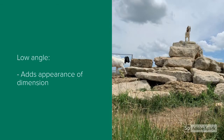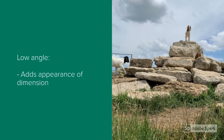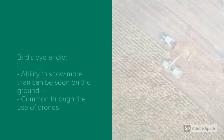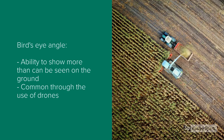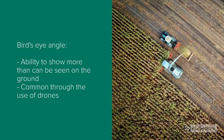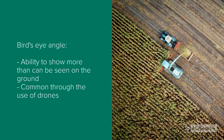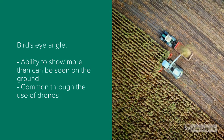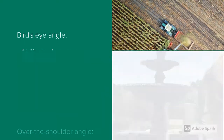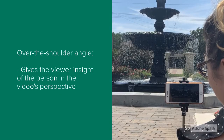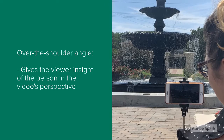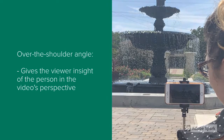A low angle on the other hand will add the appearance of dimension. In a bird's-eye angle you have the ability to show more than just what can be seen on the ground — this is common through the use of drones. An over-the-shoulder angle can give the viewer insight of the person in the video's perspective.